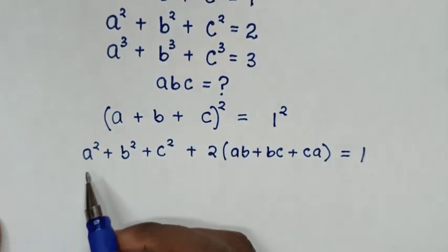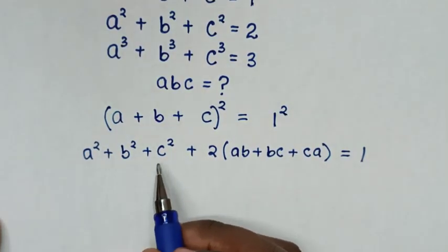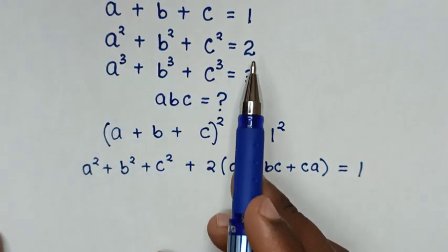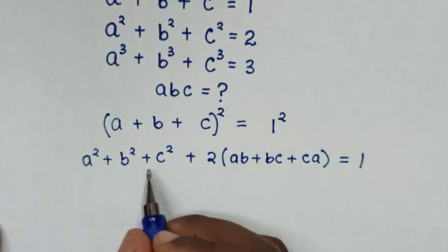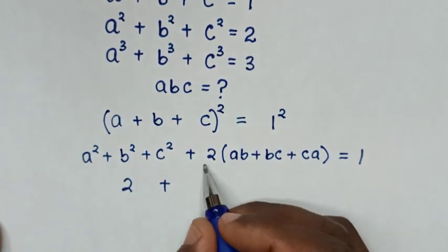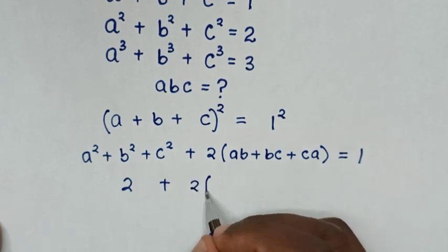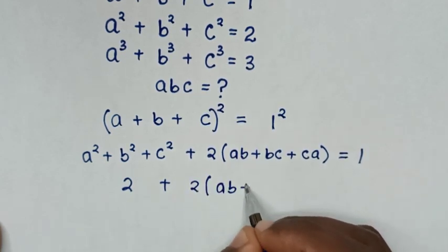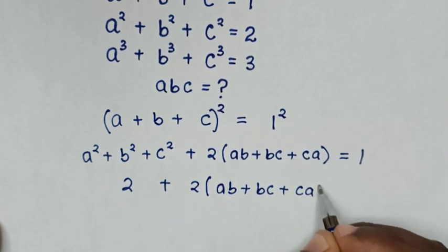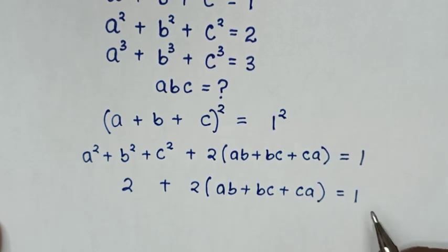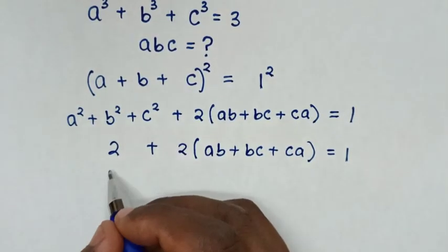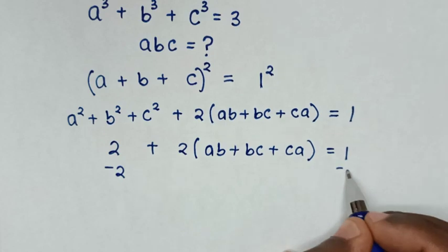In the next step, A squared plus B squared plus C squared is from the second equation, which equals 2. So we substitute that value of 2 here: 2 plus 2(AB plus BC plus CA) equals 1. Then we take 2 to the right side, subtracting 2 from both sides.